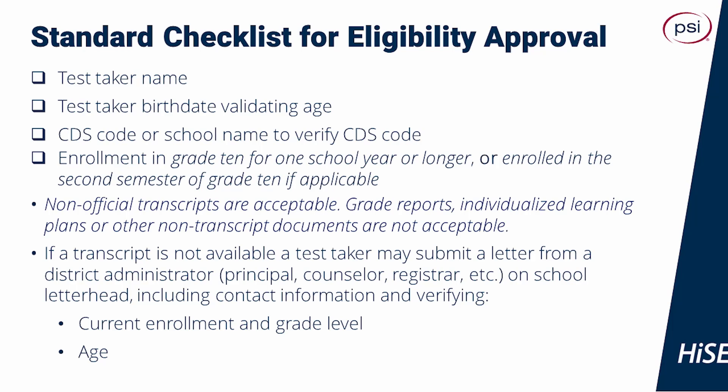The standard checklist for eligibility approval contains the following elements: we must have the test taker name, the test taker birth date validating age, CDS code or school name to verify the CDS code, enrollment in grade 10 for one school year or longer, or enrolled in the second semester of grade 10 if applicable. Non-official transcripts are acceptable; however, grade reports, individualized learning plans, or other non-transcript documents are not acceptable.